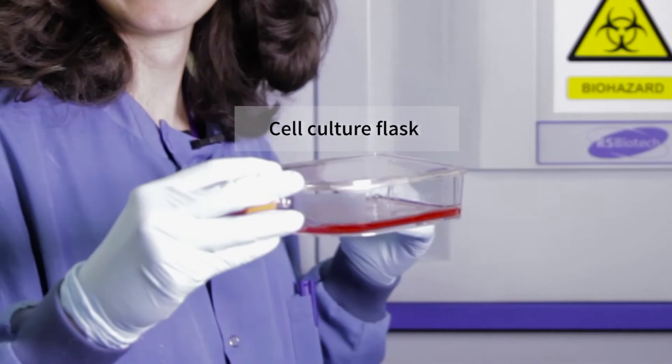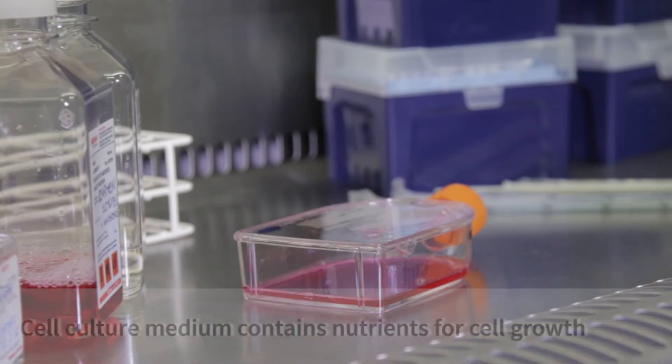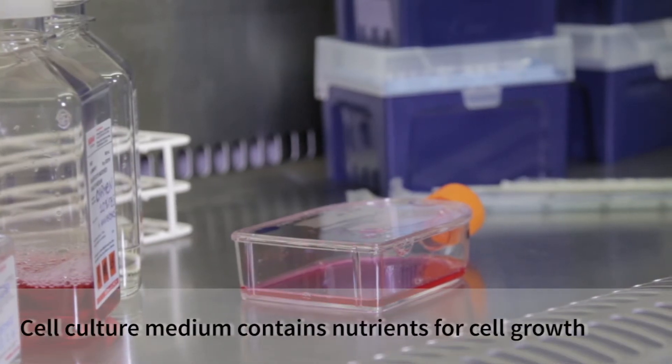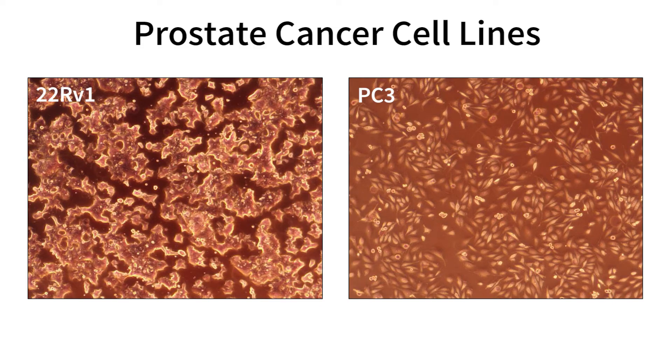Adherent cell lines can be cultured in different kinds of flasks, like this one. The cells grow attached to the bottom surface of the flask. This pink liquid is the culture medium. It contains all the nutrients that the cell needs to grow. I will now show you two different cell lines. Both are prostate cancer cell lines.